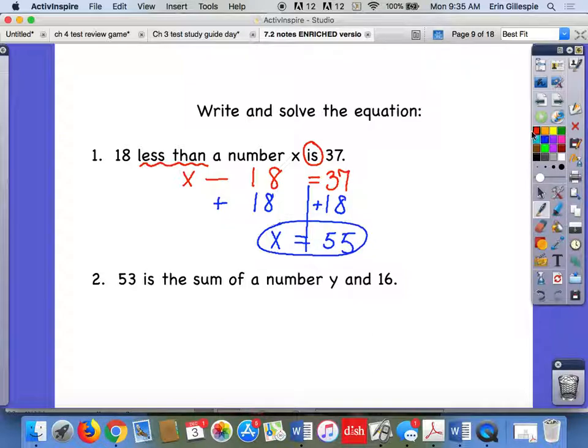Number two says 53 is the sum of a number Y and 16. So look for your equals word again in this case. So this is going to be one with the variables on the right side of the equation instead of the left. The sum of a number Y and 16, this is just like writing expressions from chapter three. Sum means addition. They're telling us what variable to use Y by saying a number Y and 16. So we want to add Y and 16. Then we can solve.